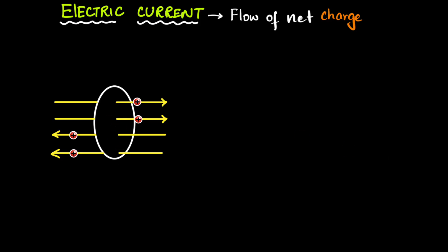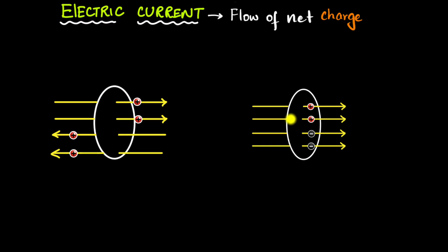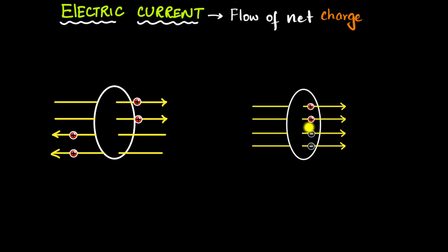Another interesting example: what if you have equal amounts of positive and negative charges flowing in the same direction, through a given cross-sectional area? Again, notice there is a flow of charges, but the total charge that's flowing is zero. So net charge is still zero and therefore there is no electric current.